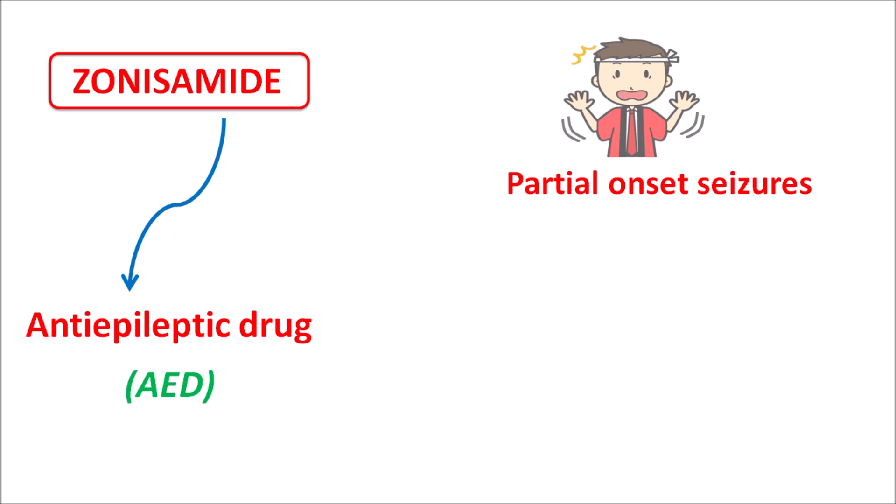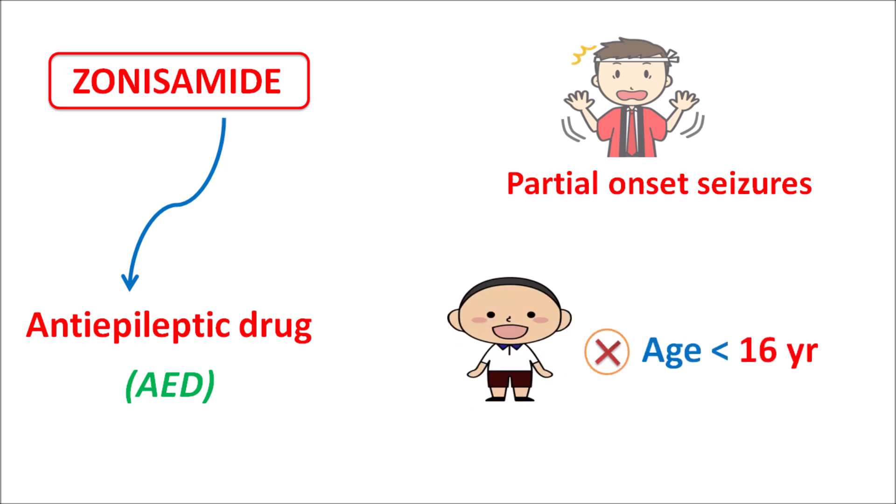This drug has some additional activity on the carbonic anhydrase enzyme. Just like diuretics, this drug can inhibit carbonic anhydrase enzyme activity, which should be considered when this drug is given along with other diuretics. Similarly, this drug should not be prescribed for children aged less than 16 years because safety is not completely established. So zonisamide is only indicated in adults and adolescents with age greater than 16 years.